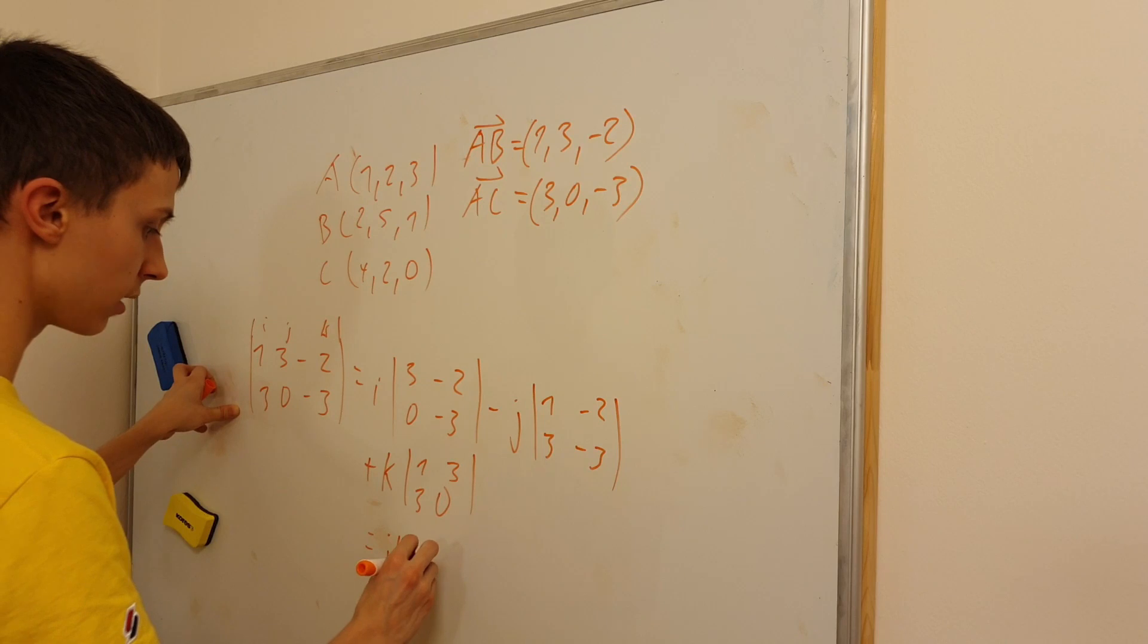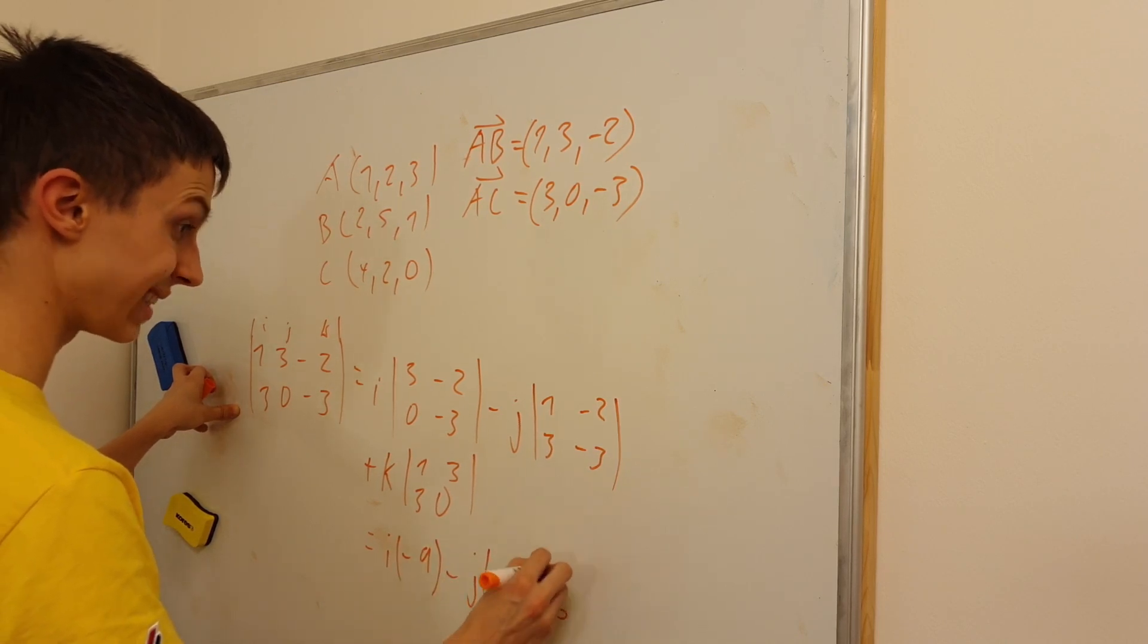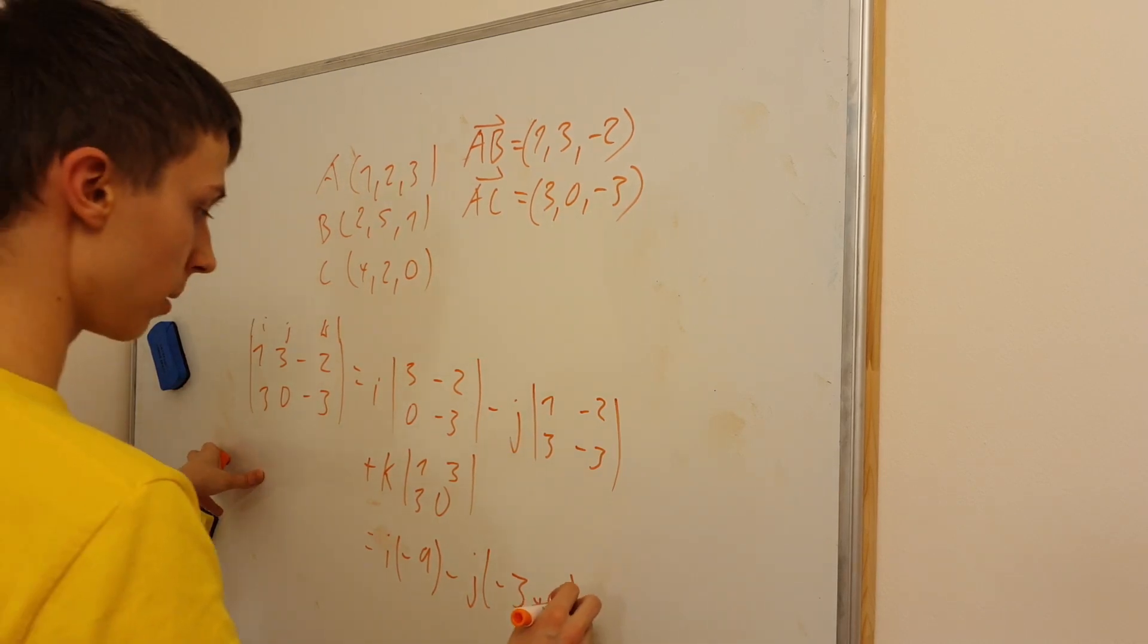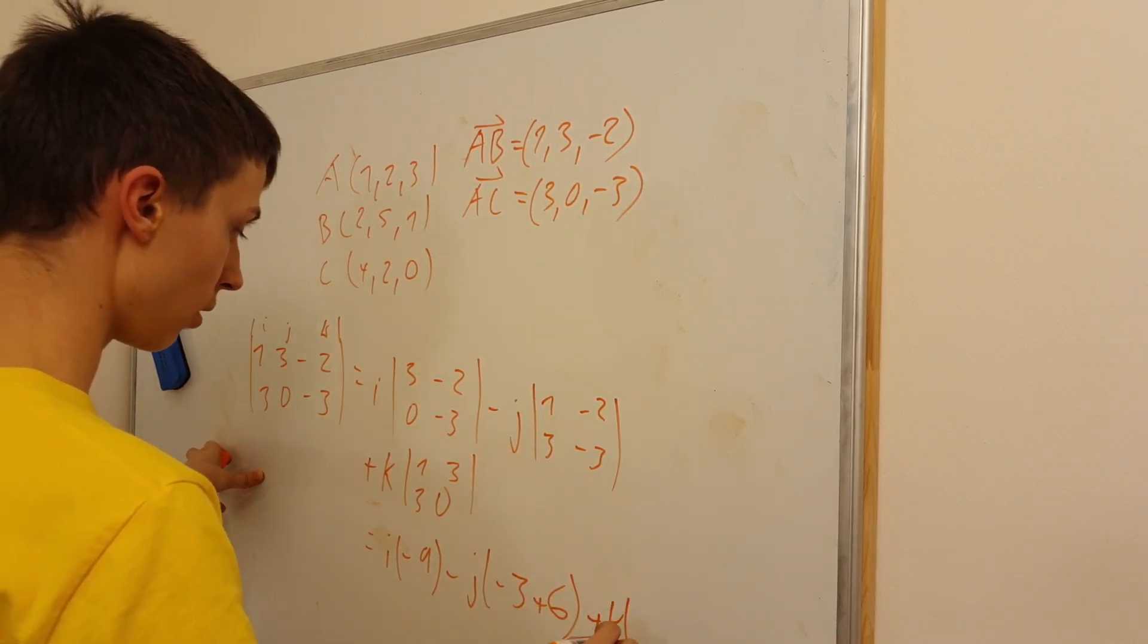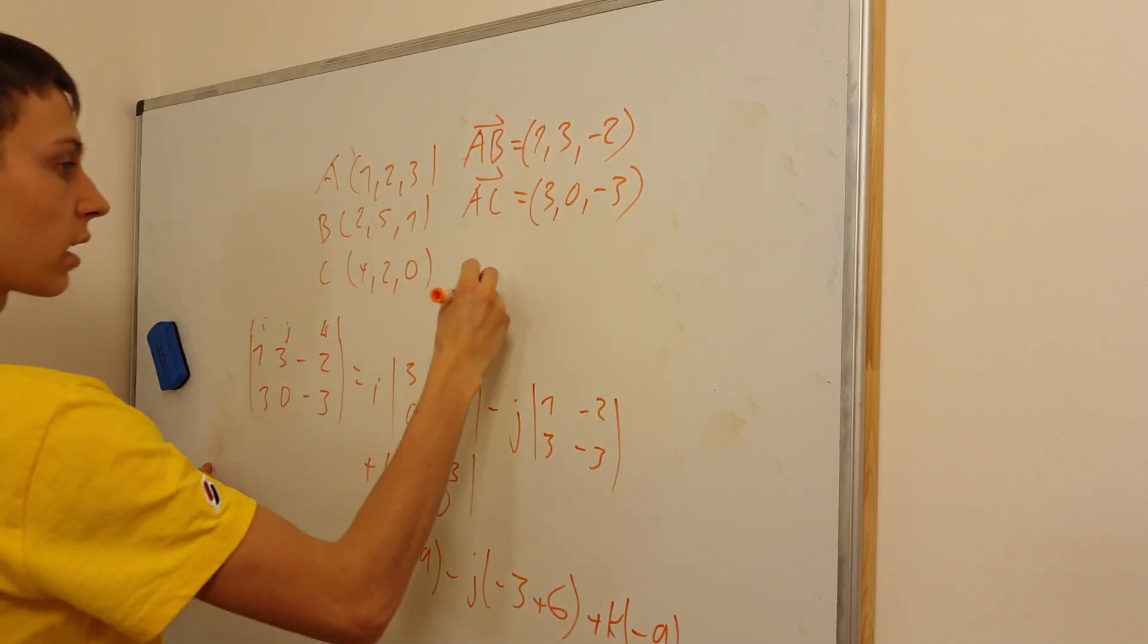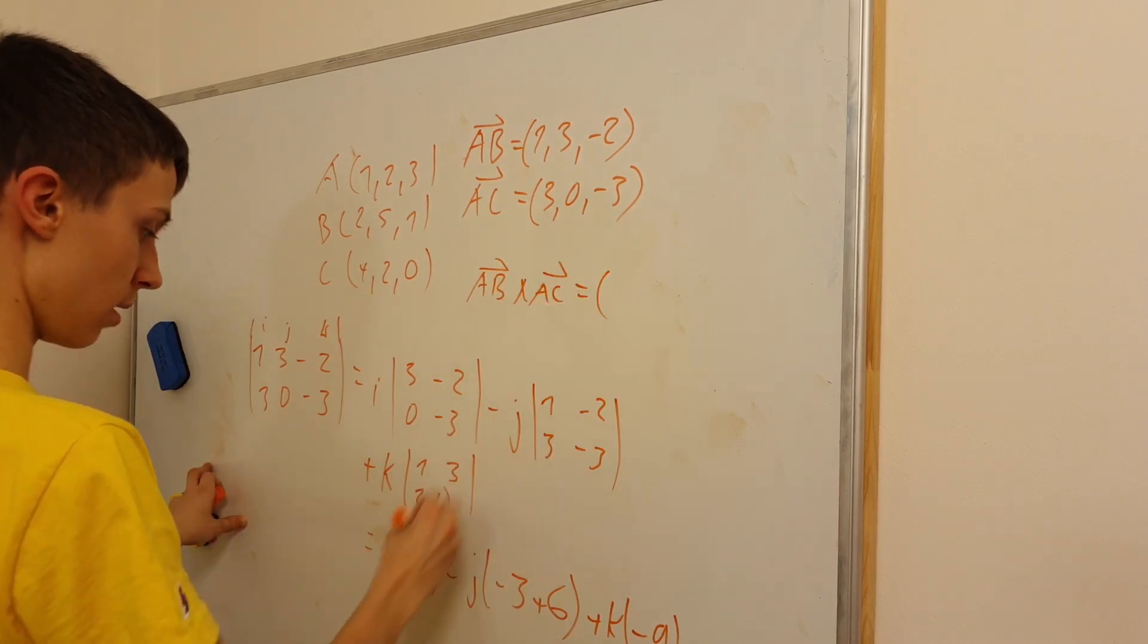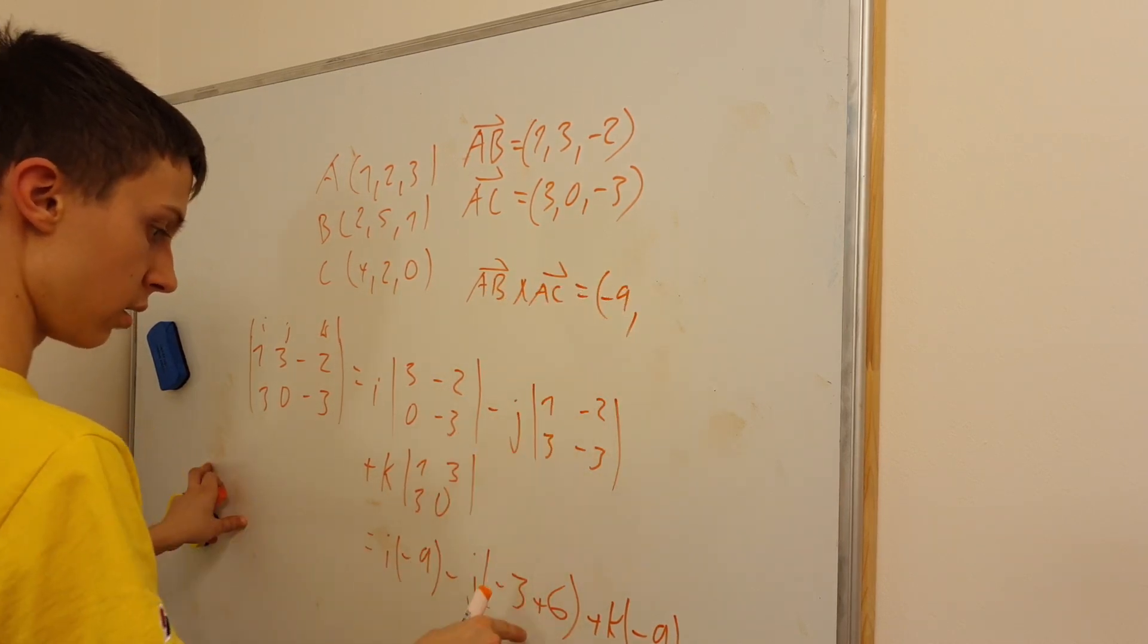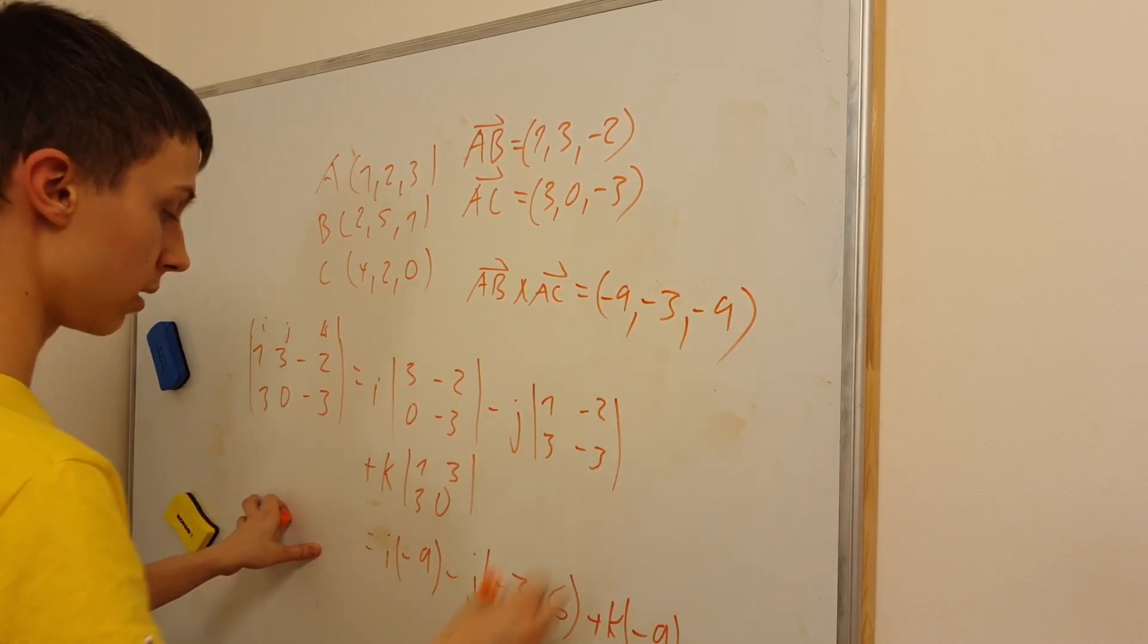This is going to be I times minus 9, minus J times minus 3 plus 6, plus K times 0 minus 9. This gives us the cross product AB cross AC is minus 9, minus 3, minus 9.